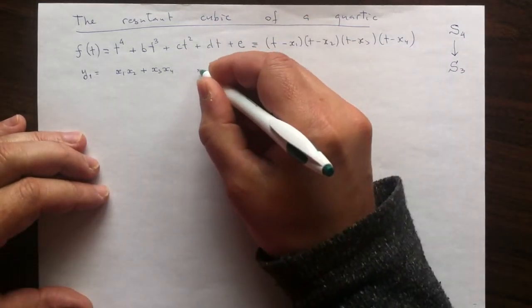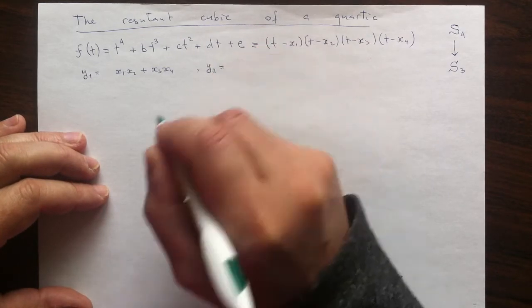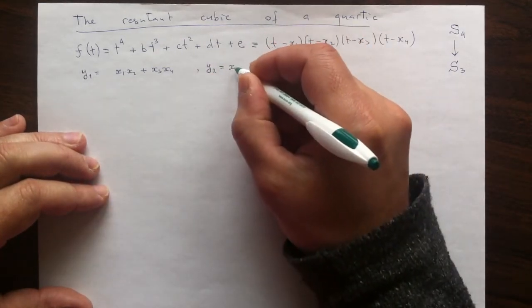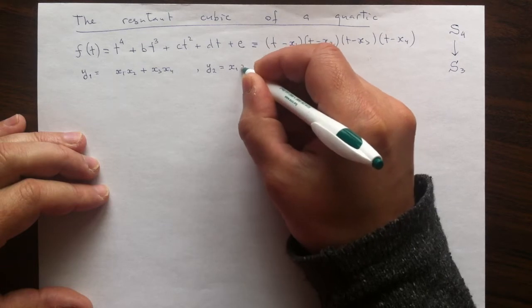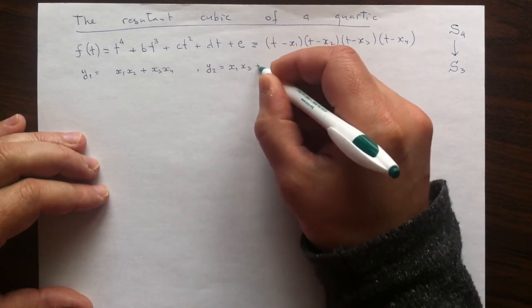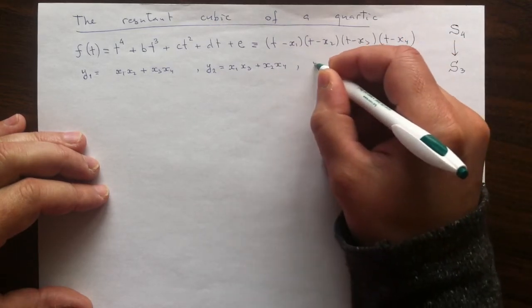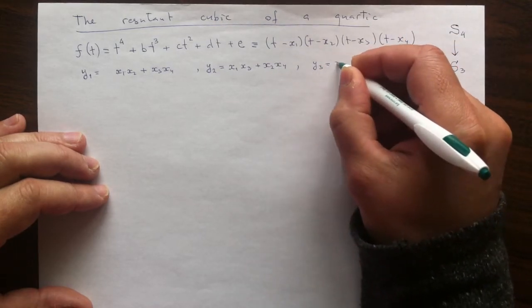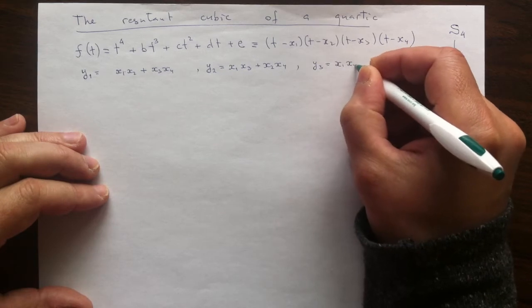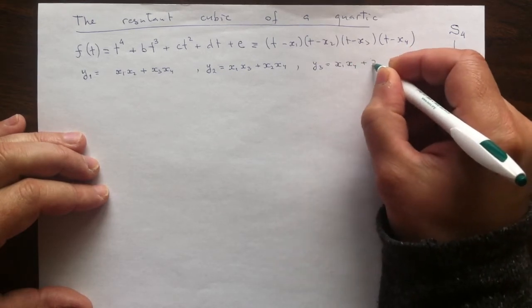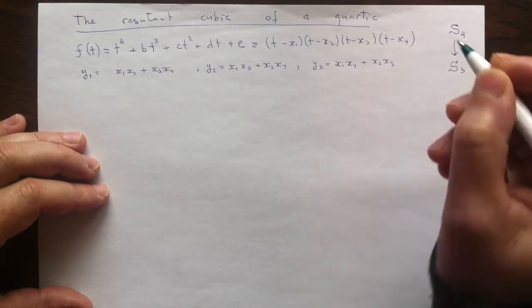Continuing the same pattern, the second new variable will be when I take as my first pair x1 and x3, and then the second pair will be x2 and x4, whatever is left.